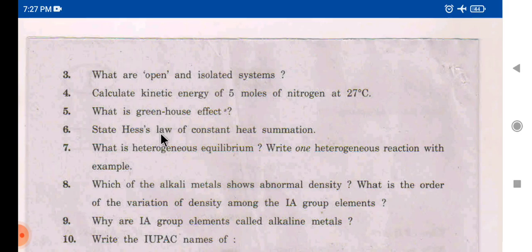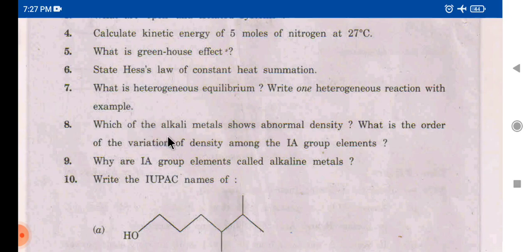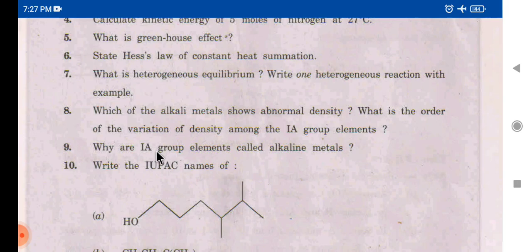Next: which of the following metals shows abnormal density? And: what is the order of variation of density among 1A group elements? Next: why are 1A group elements called alkali metals? — and also, why are 2A group elements called alkaline earth metals? That was just a spelling mistake in the paper.